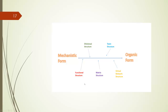These two forms represent opposite design choices. This figure shows that, in general, a functional structure is the result of choosing a mechanistic form, while a virtual network structure is the choice for an organic form. Various structures fall on this continuum.